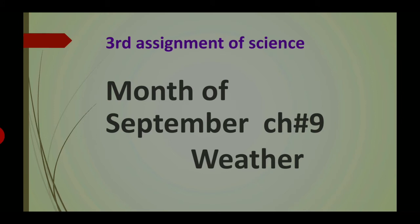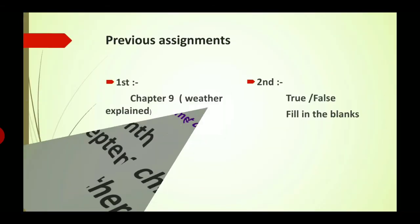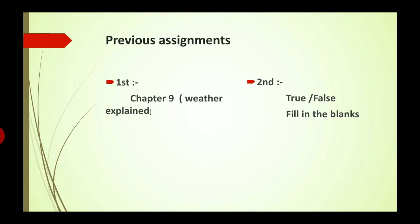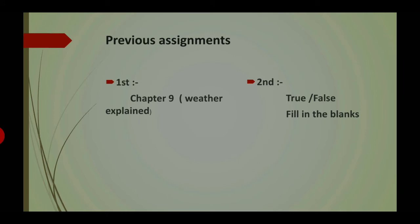In the month of September we have only one chapter — chapter number nine: Weather. Now, moving to your work in previous assignments: in the first assignment I explained chapter number nine, Weather, and gave a copy work activity. I hope you completed it. In the second assignment we did copy work — true/false and fill in the blanks — and also book work activity.